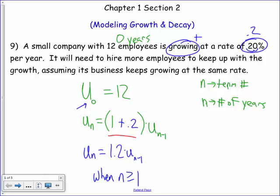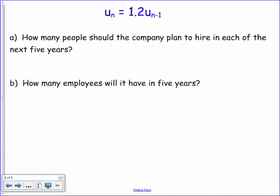Now we know our recursion formula. Let's use this to help us find some things out. It says how many people should the company plan to hire in each of the next five years? Well, we just want to apply our recursion formula. There's two ways to do this. I could basically take my calculator and start with 12, and take it times 1.2. That should tell me how many of my new employees are. Then I could take that next number times 1.2, and so on and so forth.